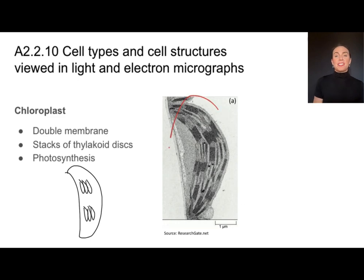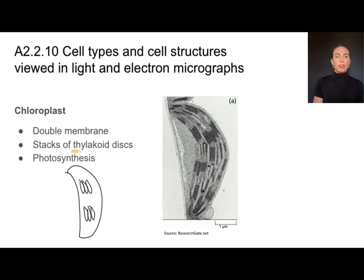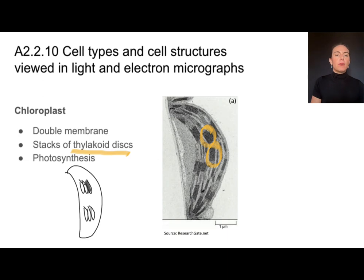Chloroplasts are something I should definitely look for in a plant cell. Chloroplasts also have a double membrane, but they don't have indentations in their inner membrane. The way I look for chloroplasts is by looking for these stacks of what we call thylakoid discs. They show up more densely or darkly on micrographs because they are full of chlorophyll, which is a light-absorbing pigment, so it stains a little bit darker.